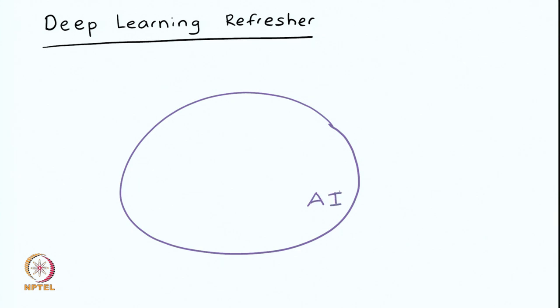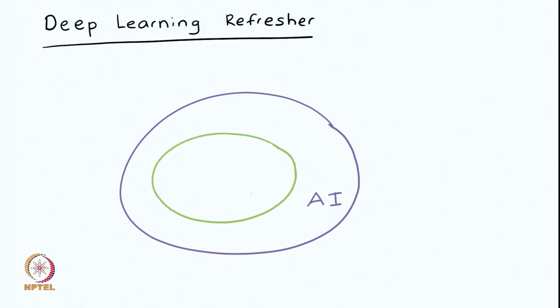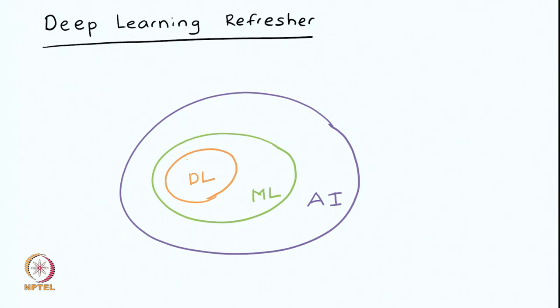AI is the bigger outer circle; within AI we have machine learning, and within machine learning we have deep learning techniques. It is very important to understand this perspective — DL and ML are not two different things. Deep learning is a subset of machine learning, which in turn is a subset of AI techniques. Within the realm of machine learning, we use deep learning to learn representations from the data automatically.